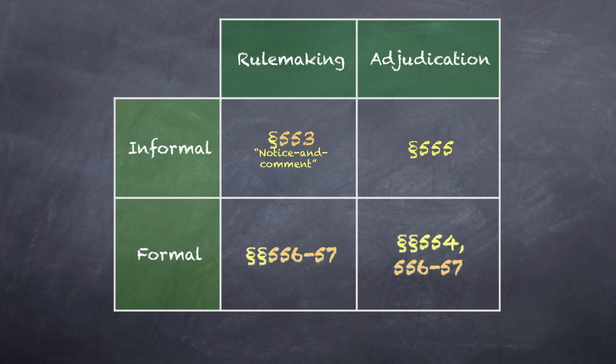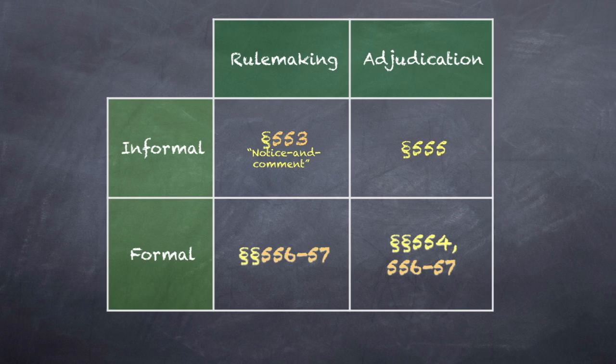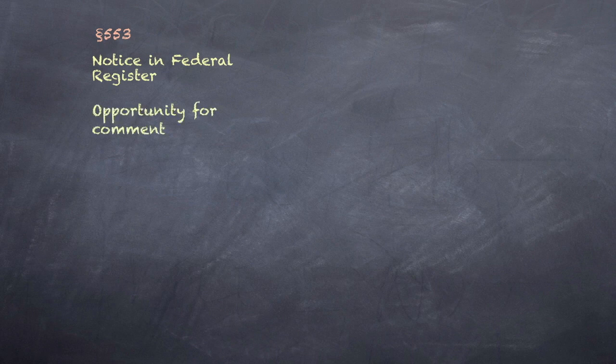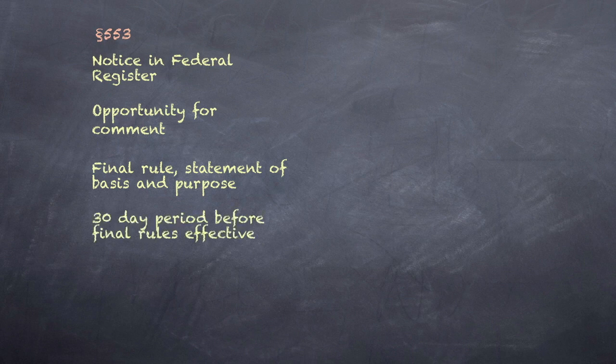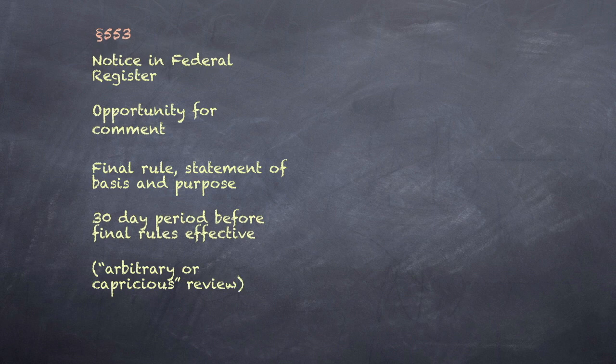Let's look more closely at what the detailed procedures involve. Under Section 553, Notice and Comment Rulemaking: notice in the Federal Register must be posted; the public must be given an opportunity for comment; the final rule, if any, must be accompanied by a statement of its basis and purpose; there must be a 30-day period to elapse before final rules become effective; and the arbitrary or capricious standard of review applies.